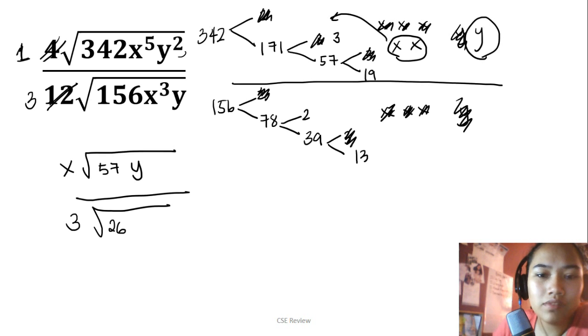So what happened? x times the square root of 57y, because that's all that's left on top. And then you have 3 times the square root of 26. There's no x and y left. That's what remains.